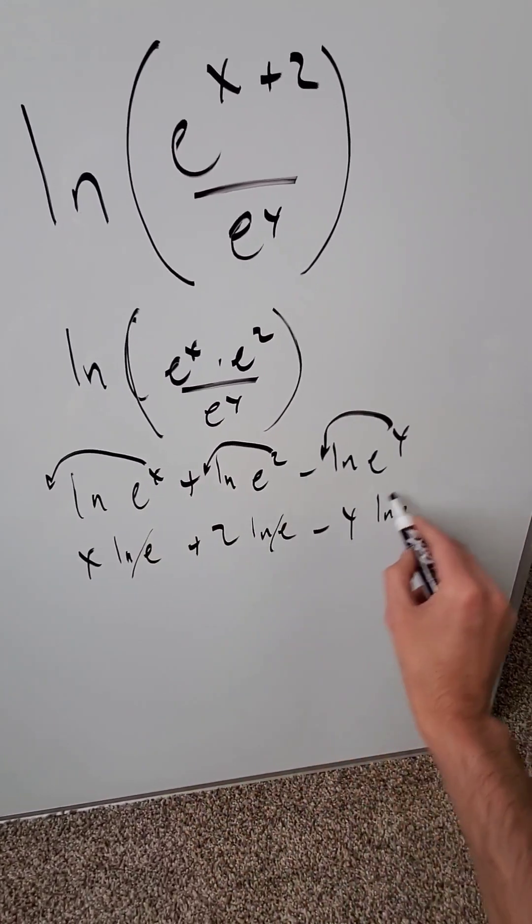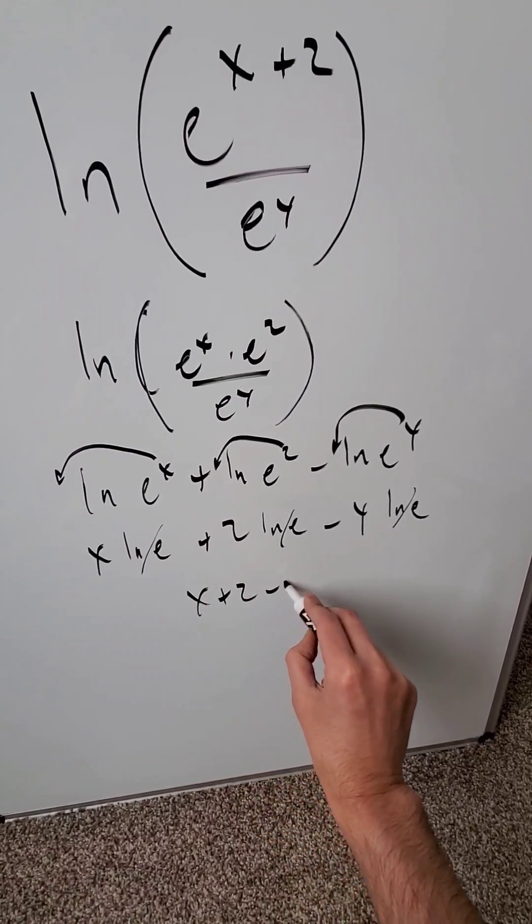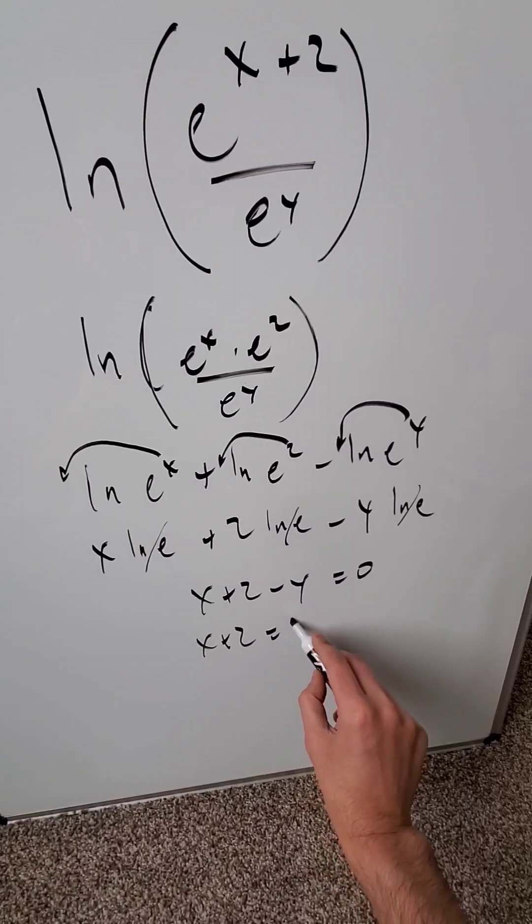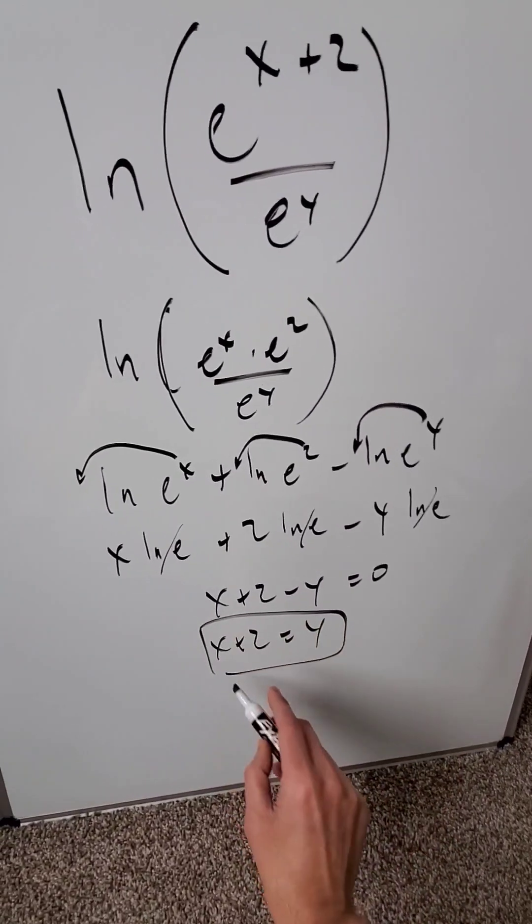Natural log e is always equal to 1. You are looking here at x plus 2 minus y. Equal it to 0 and solve for a linear equation format. x plus 2 is equal to y. And here we are done.